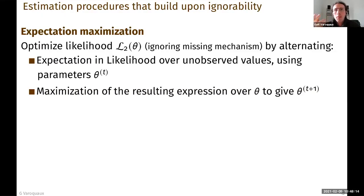The idea is that we're going to optimize the likelihood that ignores the missing value mechanism by alternating an expectation in the likelihood over the unobserved values, and then the maximization of the resulting expression and alternating the two.